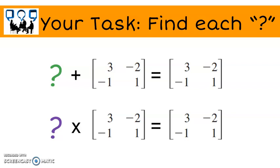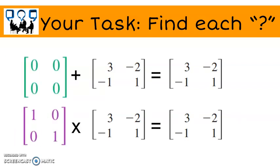Here are the answers. The matrices you found are called identity matrices. The first one is the identity for addition. The second one is the identity for multiplication.